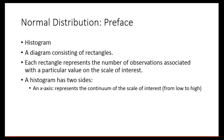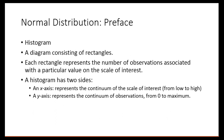First, there's an x-axis, which represents the continuum of the scale of interest from low to high, and the x-axis goes from left to right on the histogram. There's also a y-axis, which represents the continuum of observations from zero to some maximum.